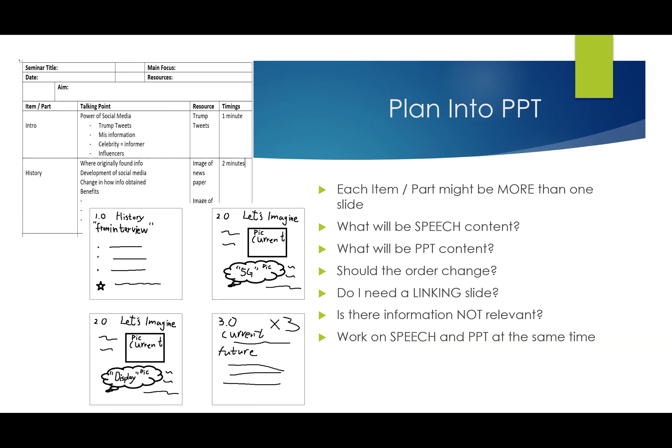Have a think if you need to change the order. Maybe you'd like to talk about the negative results of social media at the beginning, and then talk about what we used to have at the end. That's okay, so long as it still has a logical sequence. Do you need a linking slide? For instance, if you're going to be talking about China and then America in terms of part-time work, you might want a little linking slide to move from one country to another. Is there information that's not relevant to this presentation, and have you found the most interesting information to prove your points?